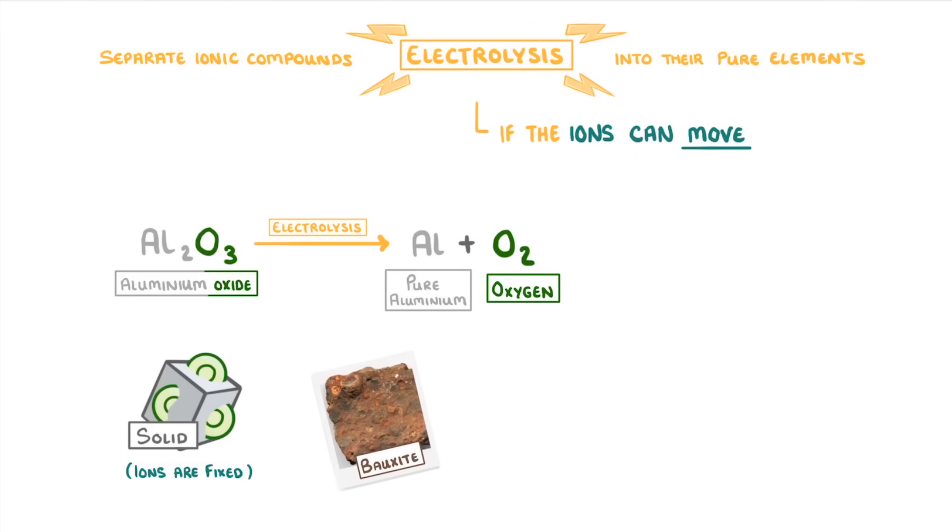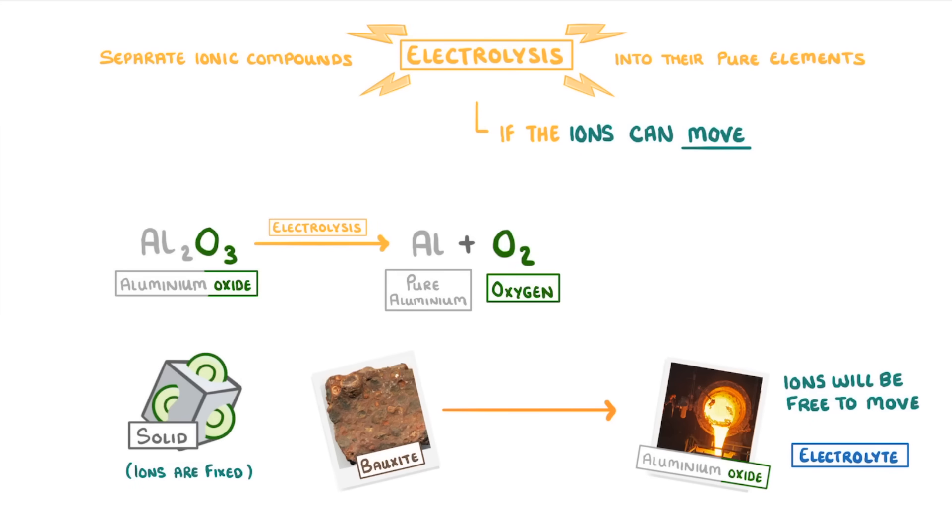So before we can do anything, we have to somehow turn this solid bauxite into molten aluminium oxide. Because if it's molten, then the ions will be free to move around, which is what it needs to be considered an electrolyte.